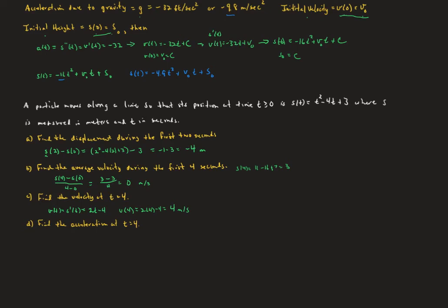The acceleration is going to be the second derivative of position, or the first derivative of velocity. Since we already got the velocity, or the first derivative of position is 2t minus 4, then that's going to be 2, and the units there are going to be meters per second squared, or meters per second per second. That would be acceptable as well. Okie doke!